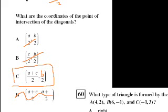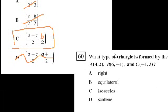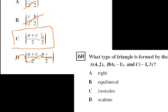Problem 60. What type of triangle is formed by the points A at (4, 2), B at (6, -1), and C at (-1, 3)? The best approach is to graph it to get an intuition, then find the distances between the points. Some of the points go a little negative, so I'll draw some of the negative quadrants.